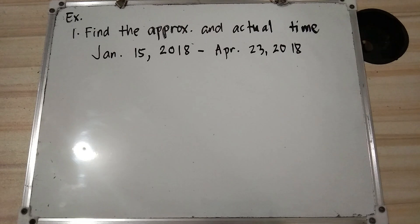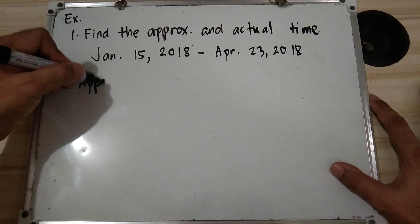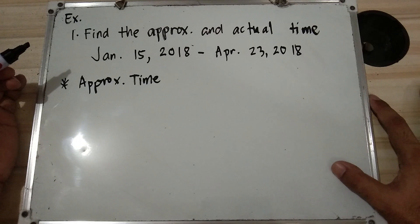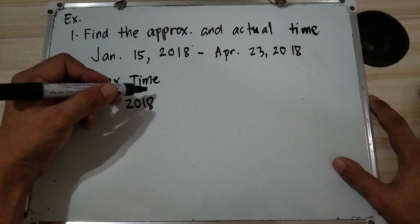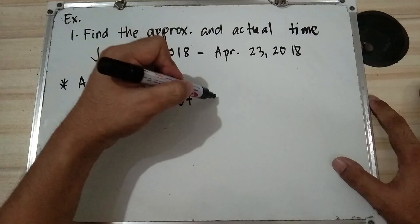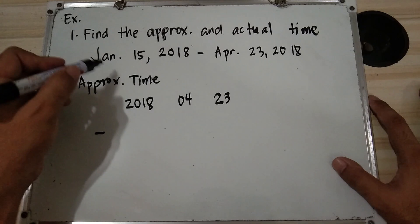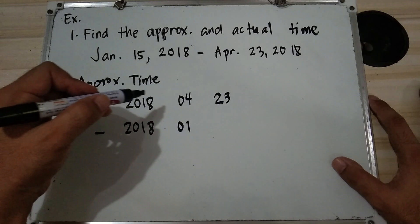Example number one: find the approximate and actual time from January 15, 2018 to April 23, 2018. For approximate time, we use the subtraction method. Place the latest date on top as the minuend: year 2018, month April is 4, day 23. Minus the earlier date below: year 2018, month January is 1, day 15.